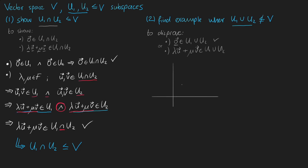Probably the easiest way to achieve this is to use two two-dimensional vectors that point in different directions. For example, for u1 we could choose all vectors that are on the y-axis, and for u2 we could choose all vectors that are on the x-axis. Because if we then add them together, we get a vector that is definitely not included in either of them.